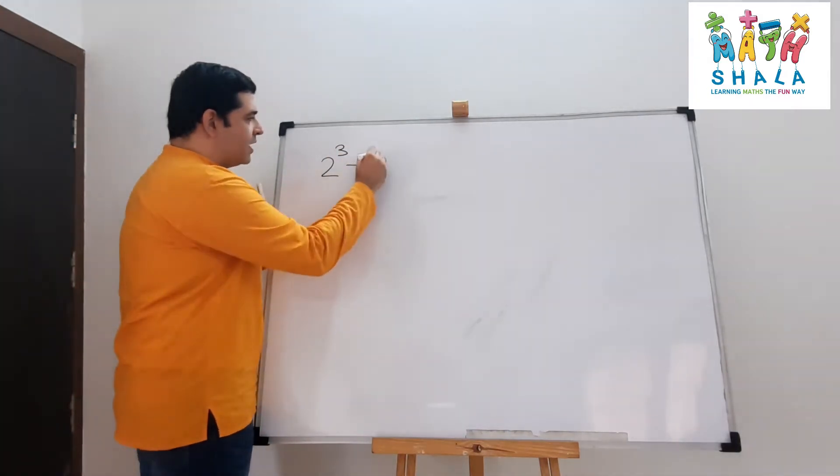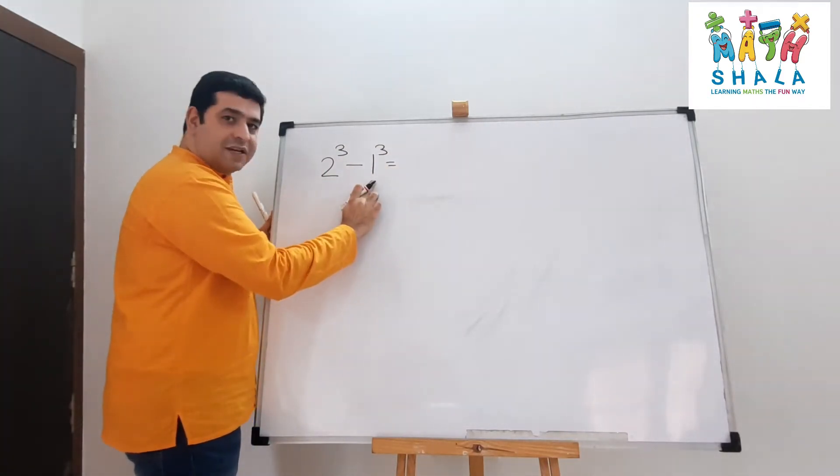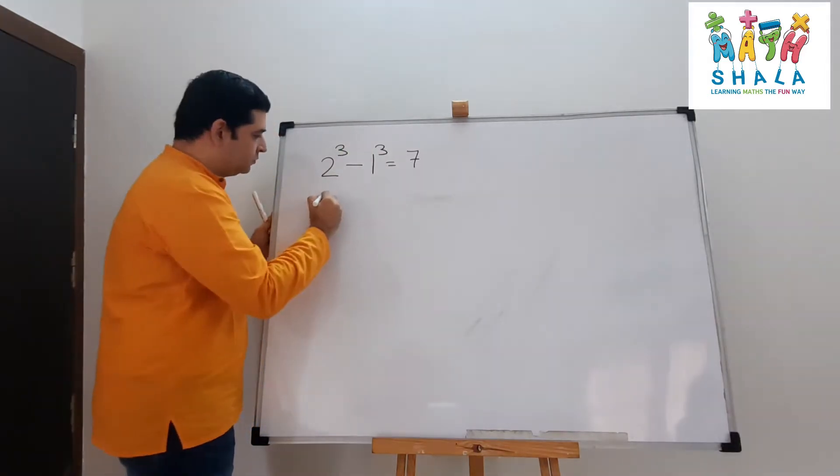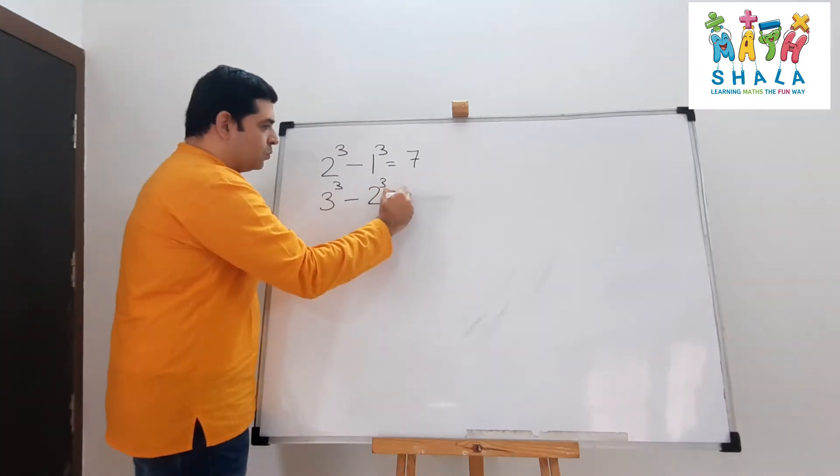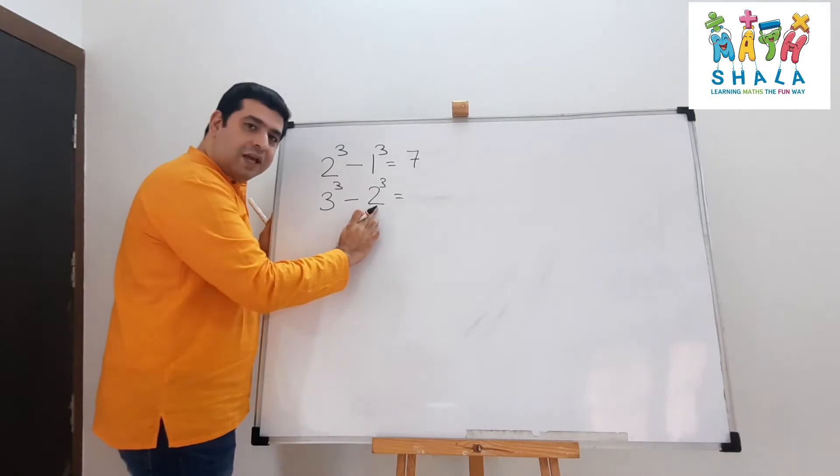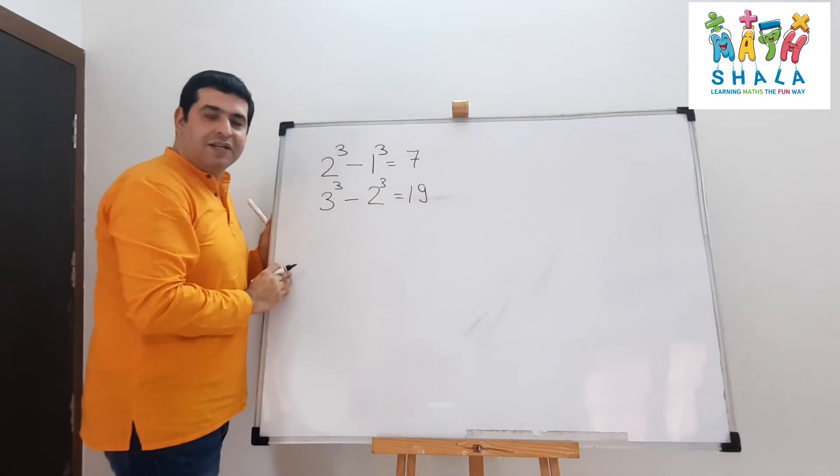2 cube minus 1 cube: 8 minus 1 equals 7. 3 cube minus 2 cube: 27 minus 8, which is 19.